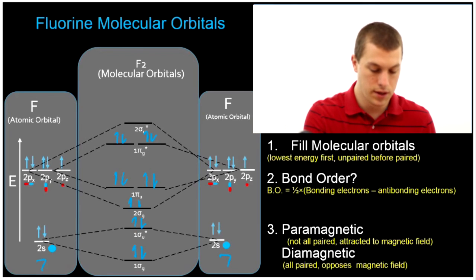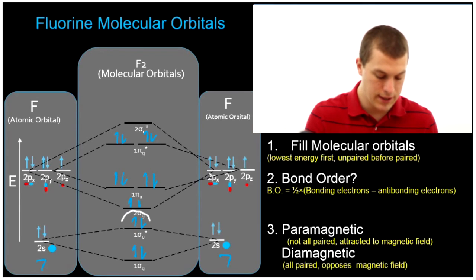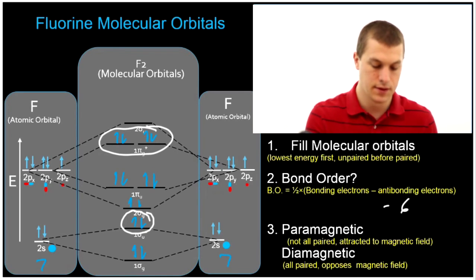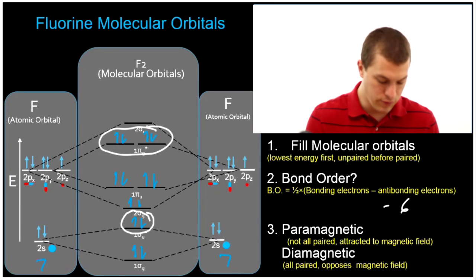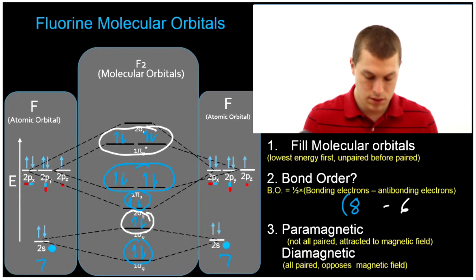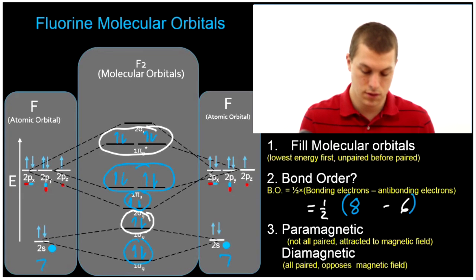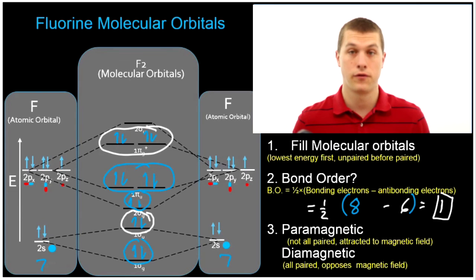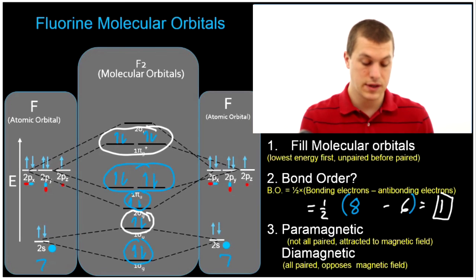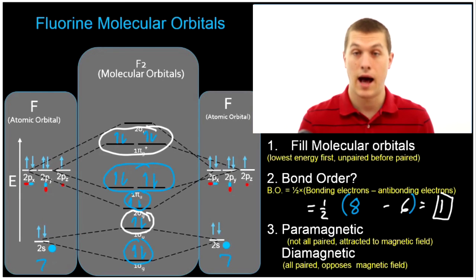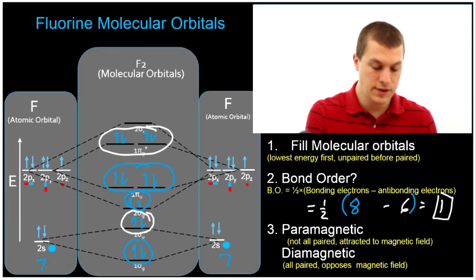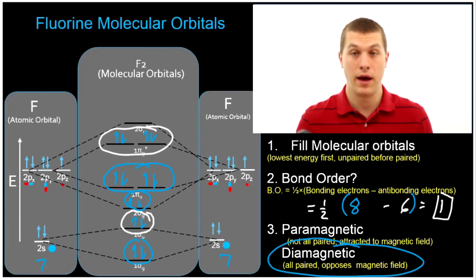Now we can calculate bond order again. We have two antibonding electrons here and four antibonding electrons there, so our total antibonding electrons is six. We also count our bonding electrons: one through eight. When we do our formula, one half times (8 minus 6) gives us one half times two, which equals one. So our bond order for fluorine is one. You'll also notice that all the electrons in the molecular orbital — even those in the top pi molecular orbital — are paired, and that means fluorine is diamagnetic and will be repelled by a magnetic field.